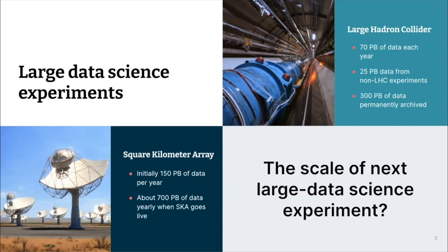Moving on to what kind of data the SKA is going to generate: when the SKA goes live, which is very soon, that will be about 150 petabytes of data each year. This data will be taken across to different regional science centres in the world where scientific analysis will happen. That's expected to help discover new celestial objects, new galaxies, and discover features about galaxies we already know. In its prime, the SKA is expected to generate about 700 petabytes of data each year — all of which will have to be stored, archived, and processed.